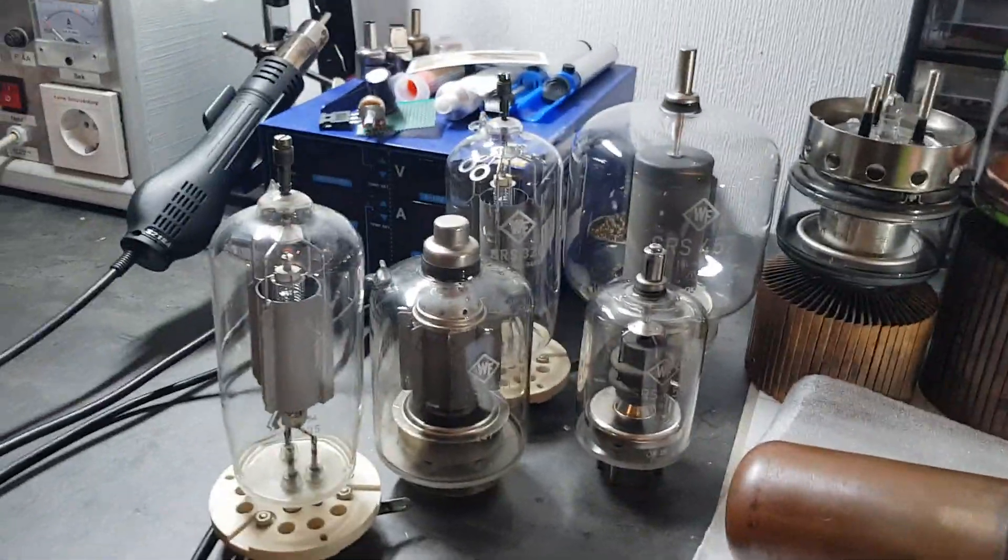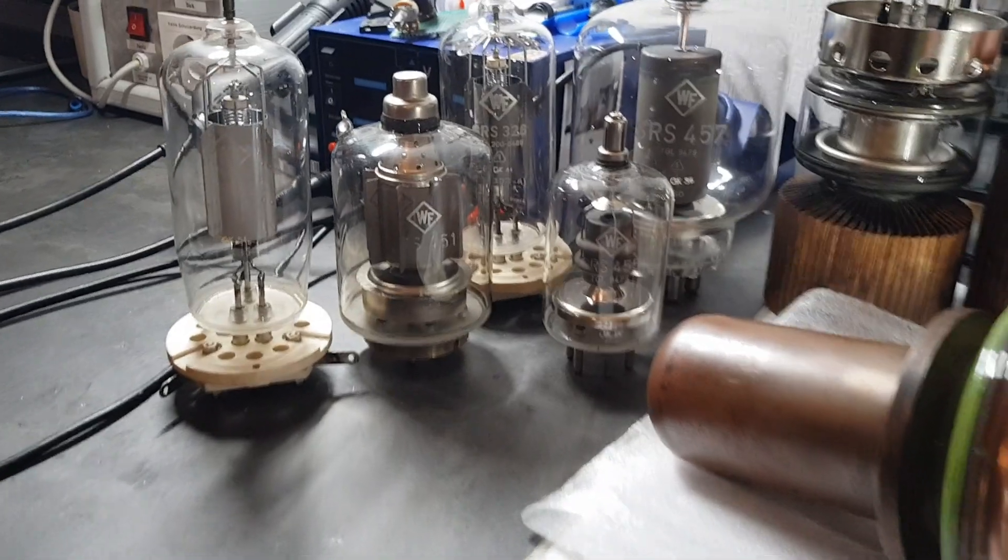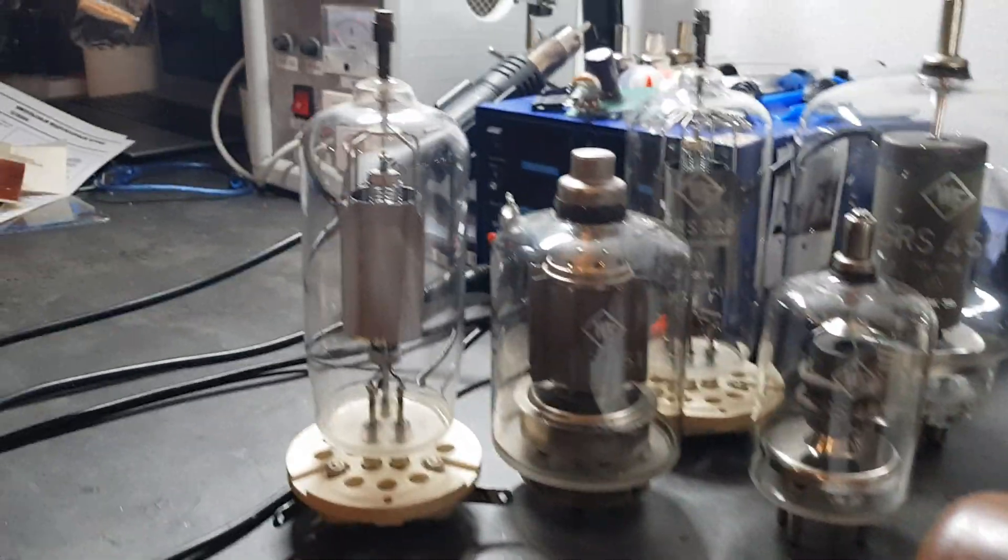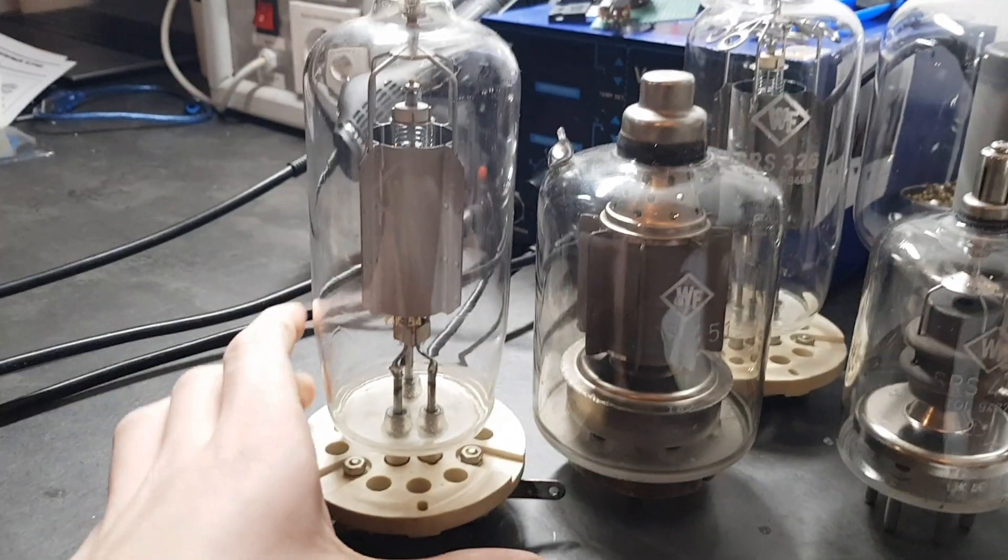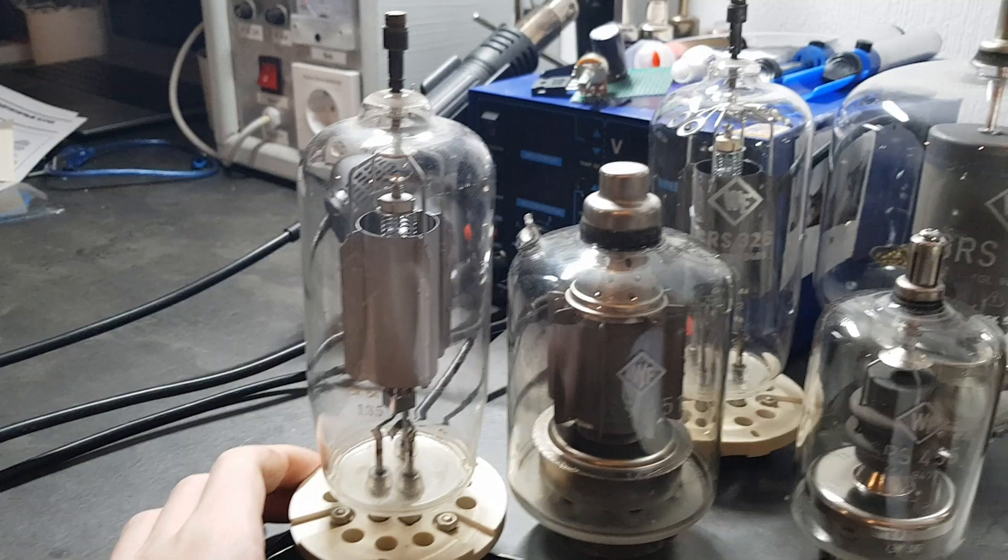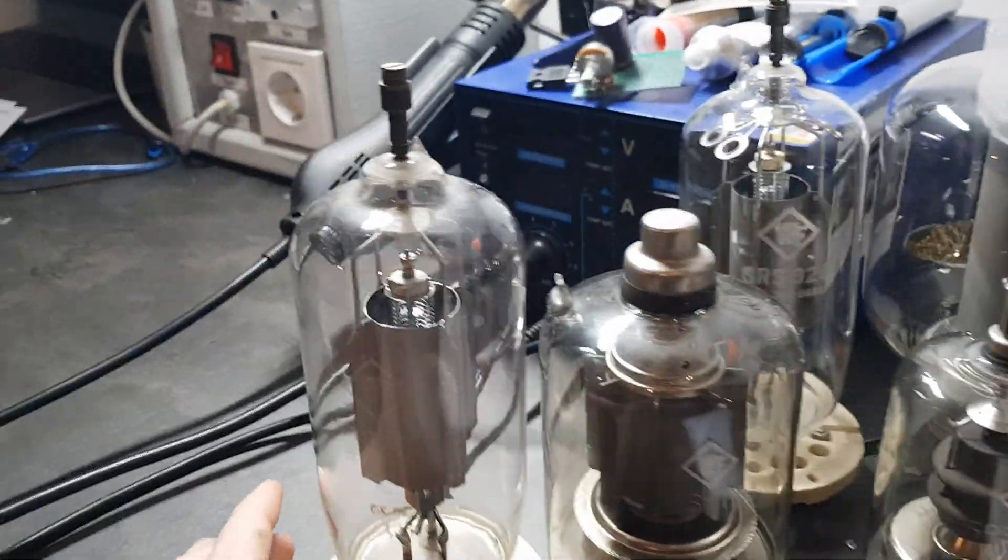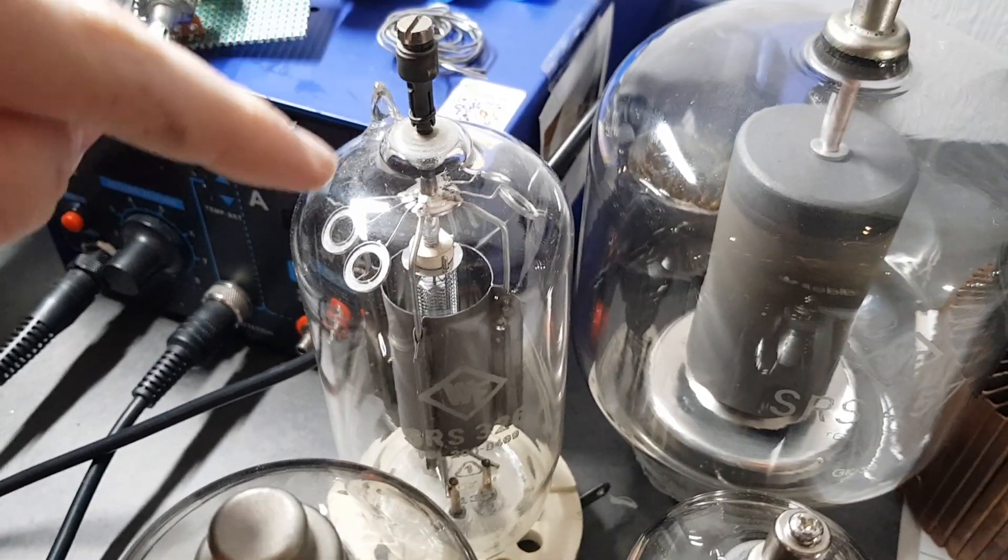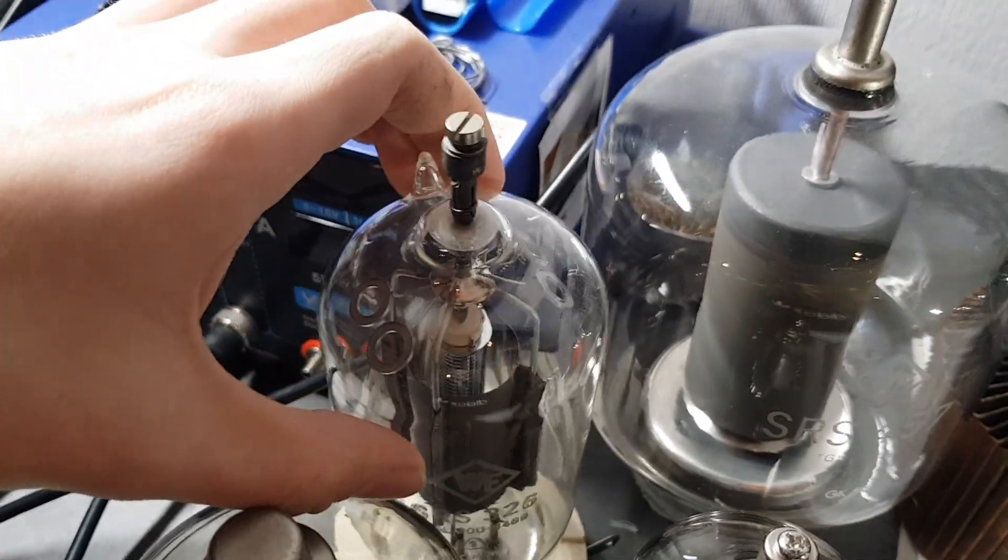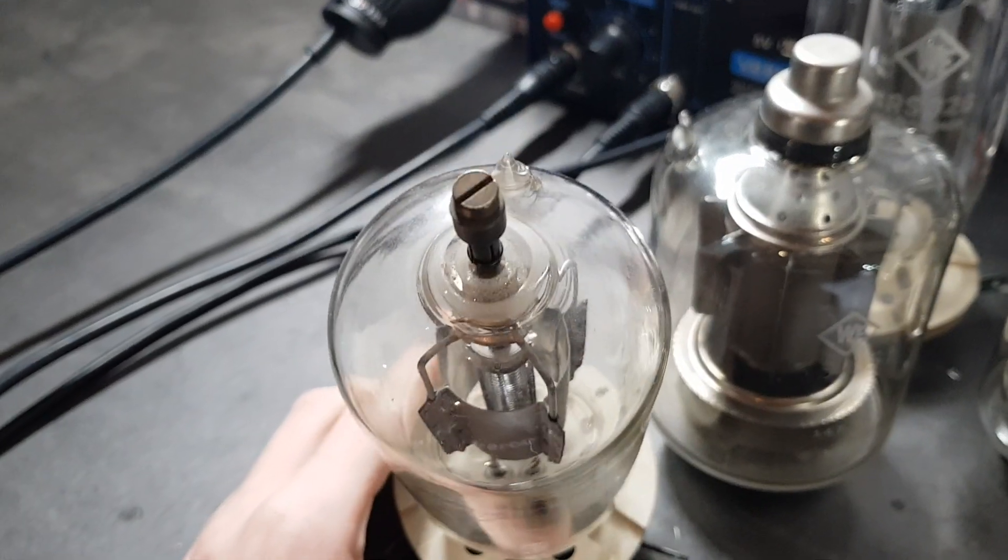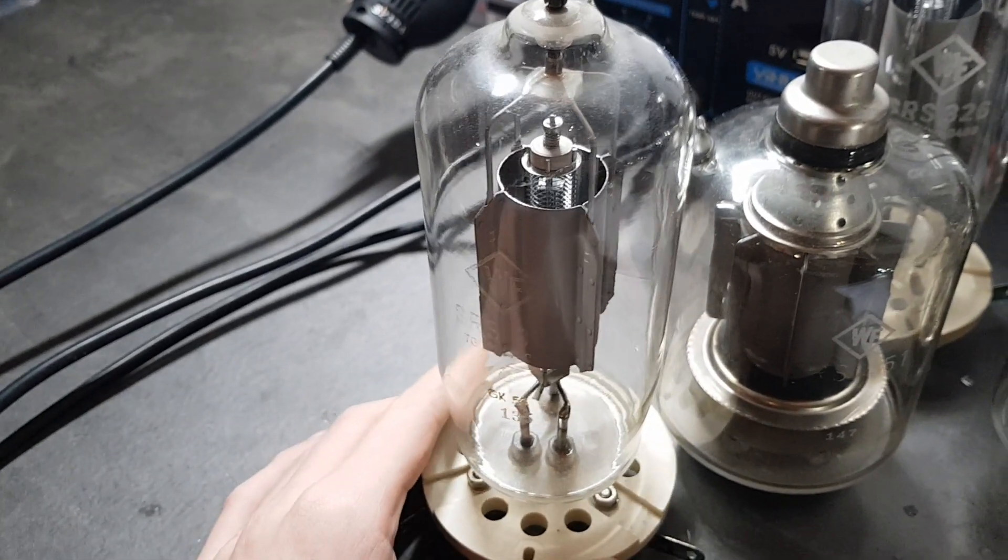Let's start here with the German tubes. These are all SRS tubes. This is the SRS 326 and as you can see I have it two times, but this has a star-shaped getter inside here and this tube doesn't have that getter. Quite interesting.